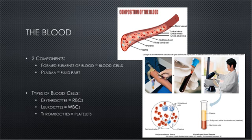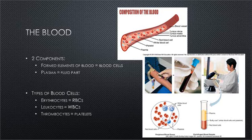Let's focus now on the blood. Blood is pretty complex if you think about it. There are two basic components on the large scale: the formed elements of blood, which are the blood cells, and the plasma, which is the fluid part. The plasma is a mixture of water, amino acids, proteins, carbohydrates, lipids, vitamins, hormones, electrolytes, and cellular wastes. Specifically, the plasma contains about 92% water and about 7% protein. The rest is minute.